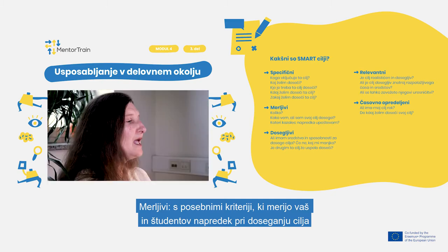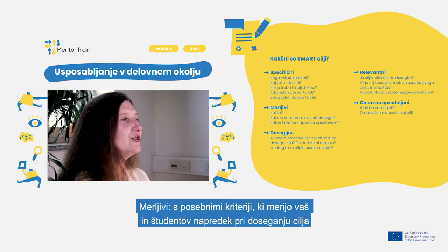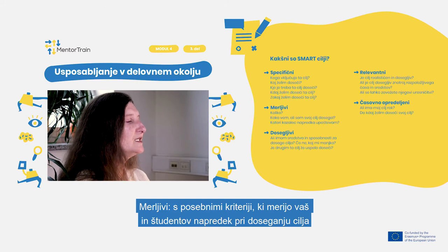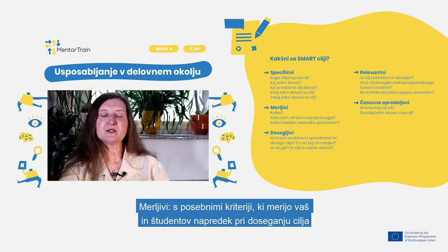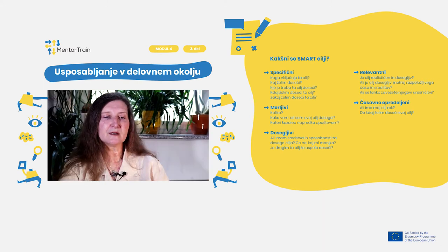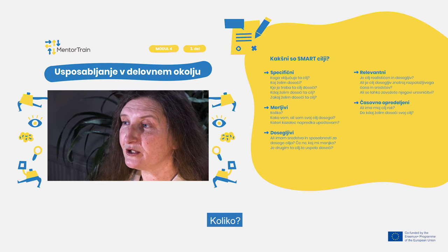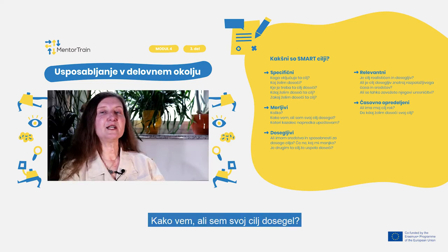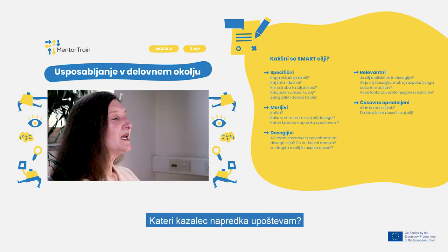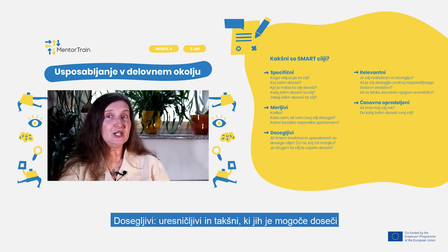Measurable — with specific criteria that measure your and your apprentice's progress toward the accomplishment of the goals. How many or how much? How do I know if I have reached a goal? What is my indicator of progress?